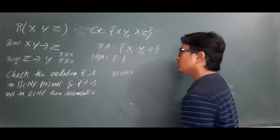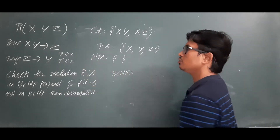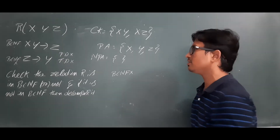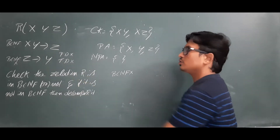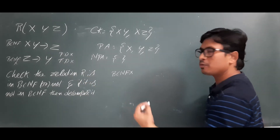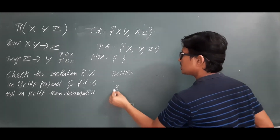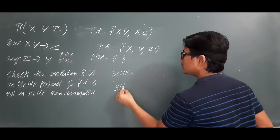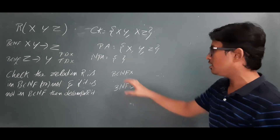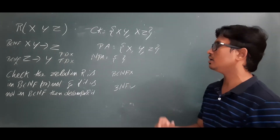You can ask what is the highest normal form. As there are no partial dependencies, it is in 2NF. As there are no transitive dependencies, it is in 3NF. Between 2NF and 3NF, 3NF is the highest. So I can say that relation R is in 3NF but not in BCNF.